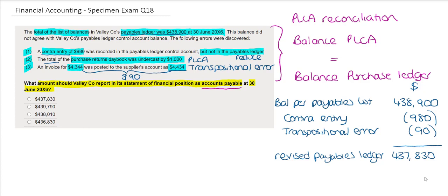Based on the assumption that all of the errors have been found and updated our balance per our purchase ledger will equal our balance per the purchase ledger control account in the general ledger. This is the balance that is included in the statement of financial position and so therefore our revised payables ledger balance of $437,830 must equal our purchase ledger control account balance and so therefore looking at the options available to us our correct answer is the first option.